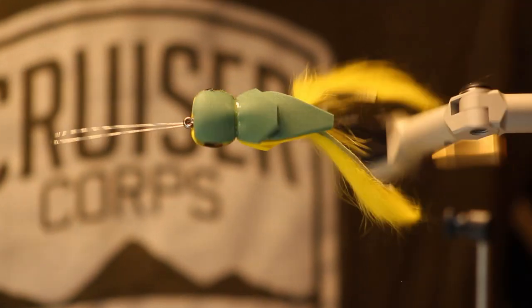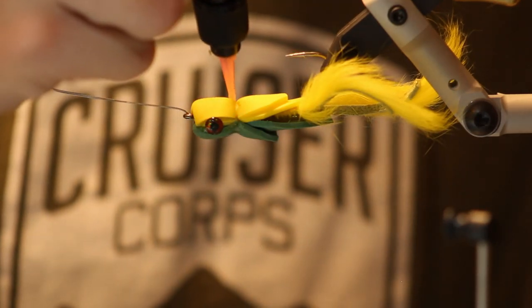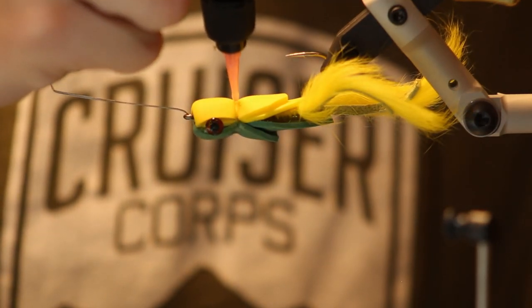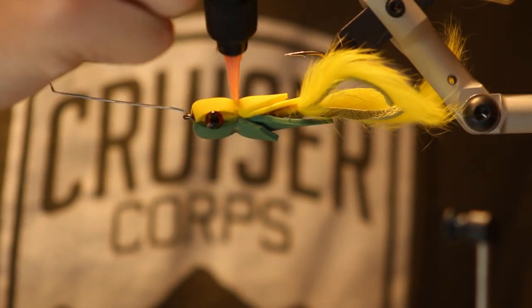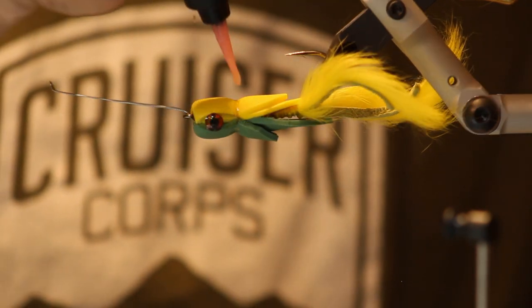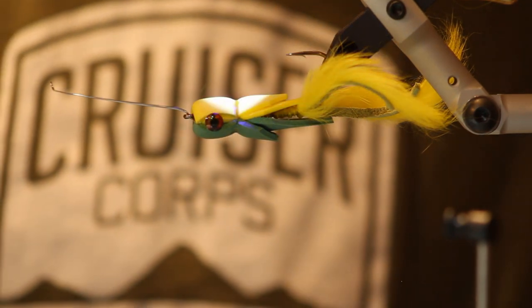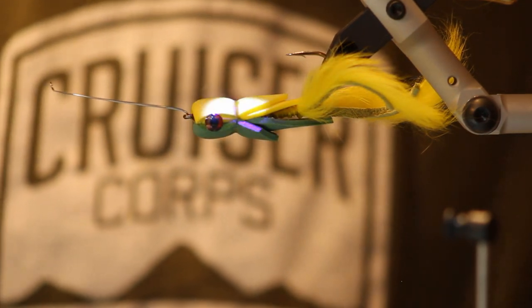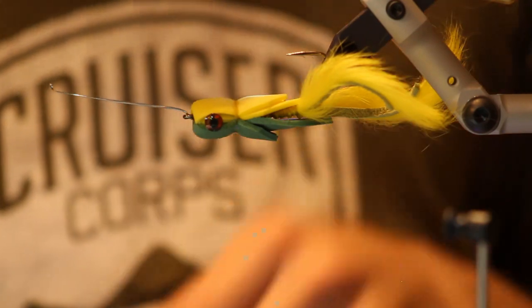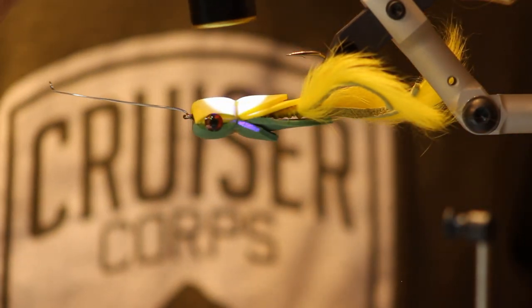Alright. If you want to, you can put some UV glue on the bottom as well if you want. Cook that with the light again. Just adds durability. And you can glue this whole head if you want. I kind of find it excessive.